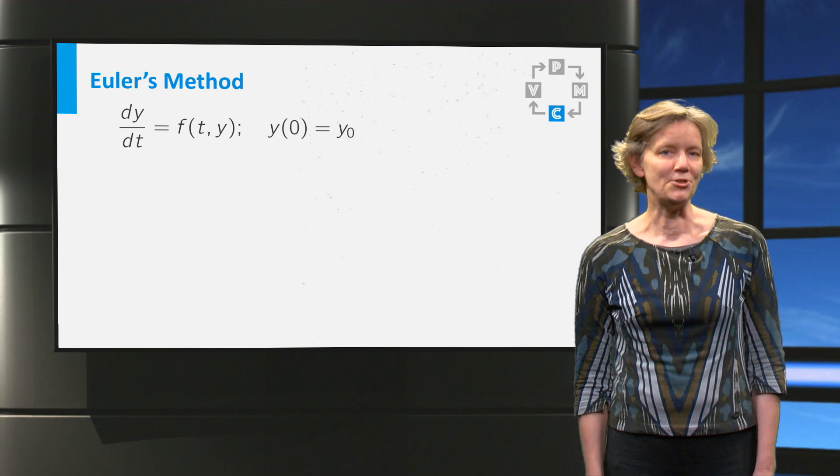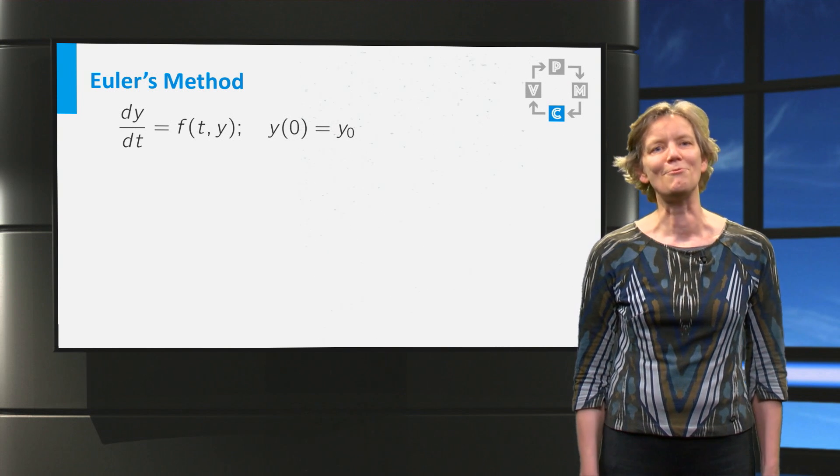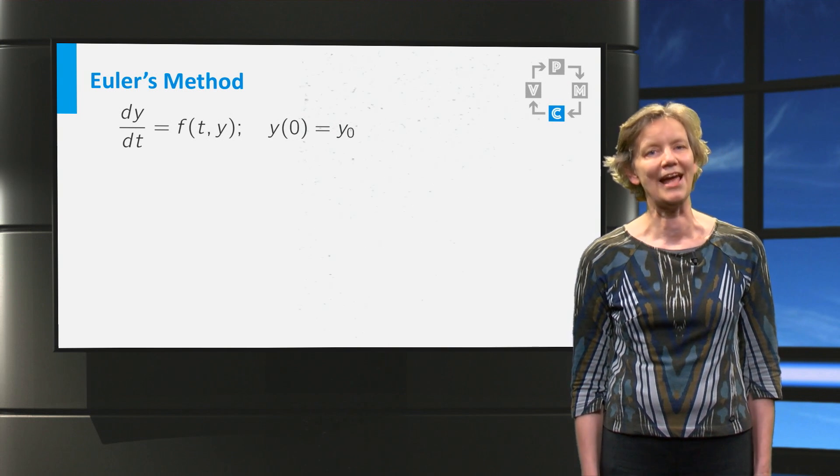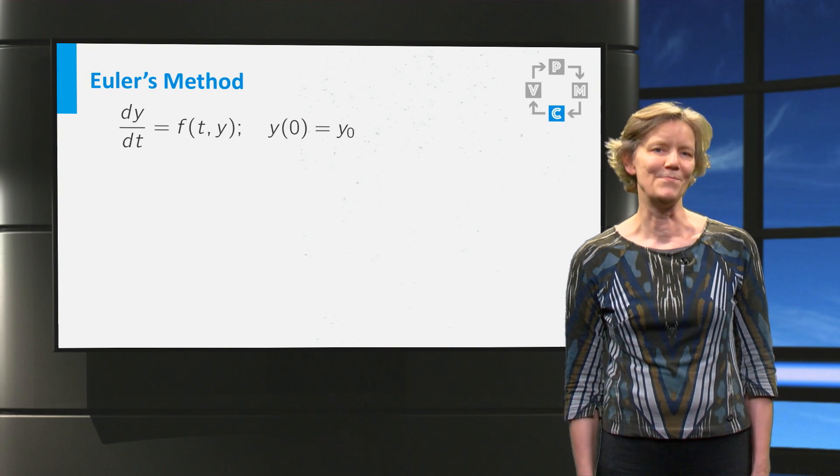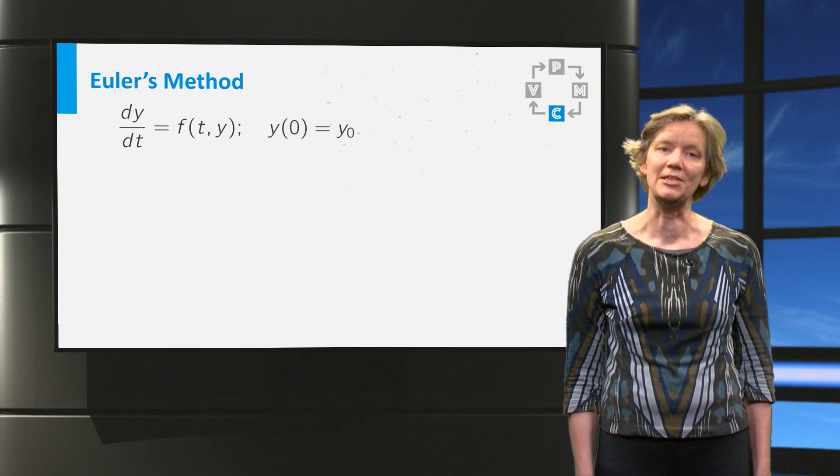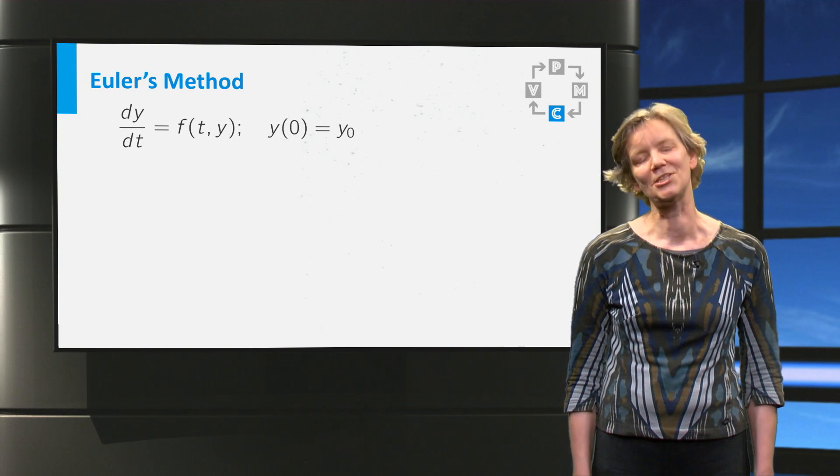Here we have a general differential equation. The derivative of y is equal to a function f of t and y. We will approximate the solution with a numerical method, with Euler's method.